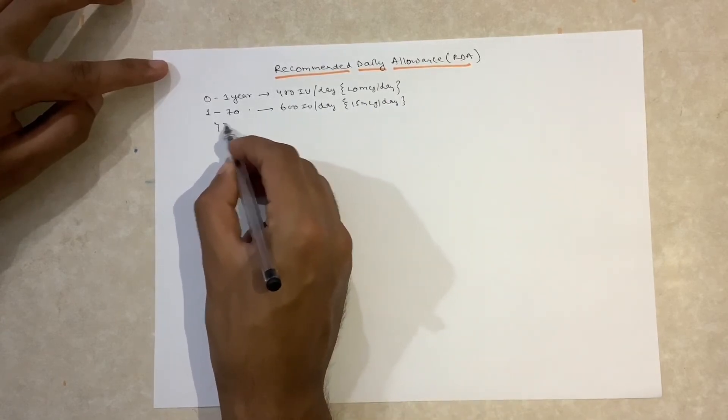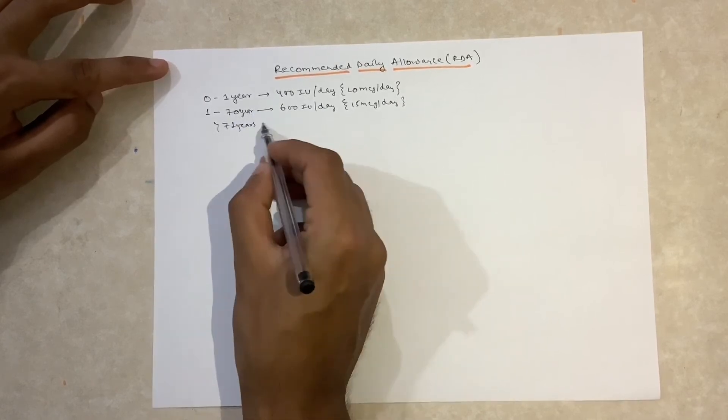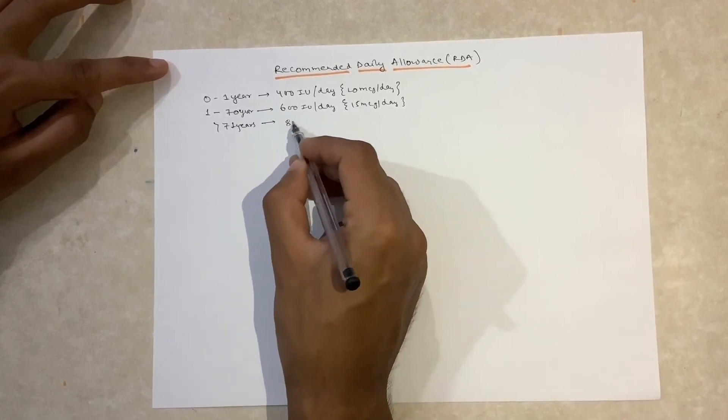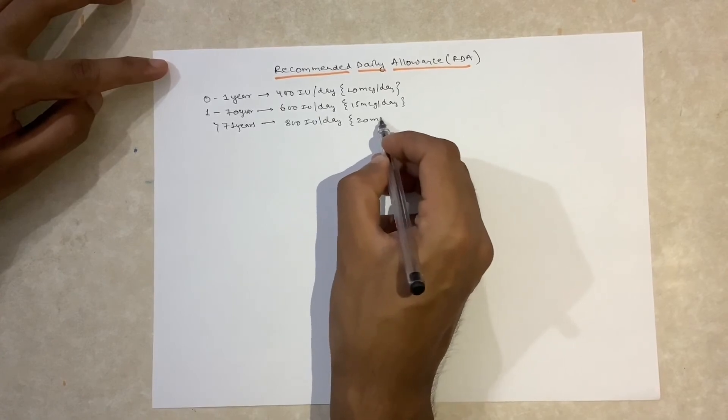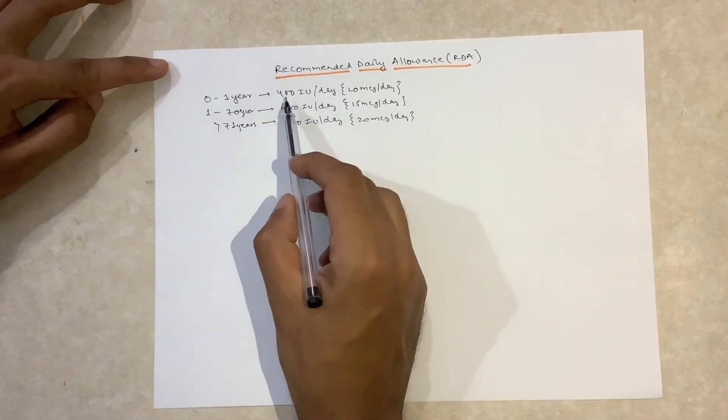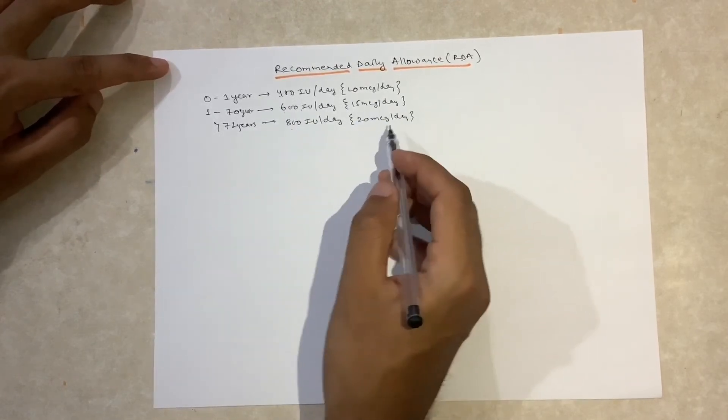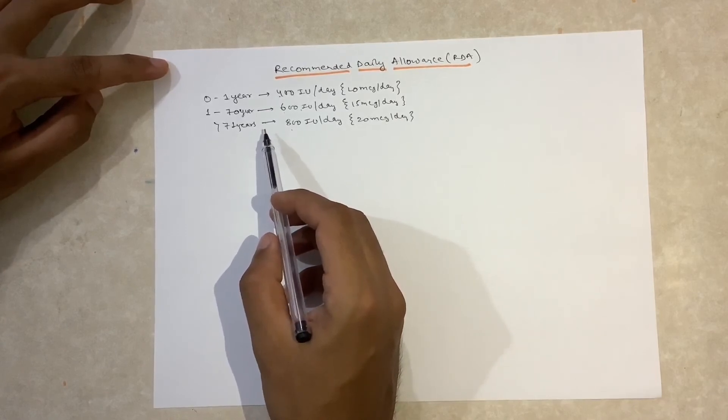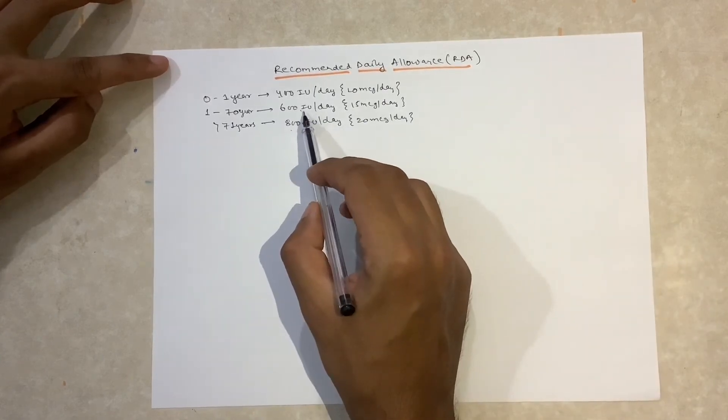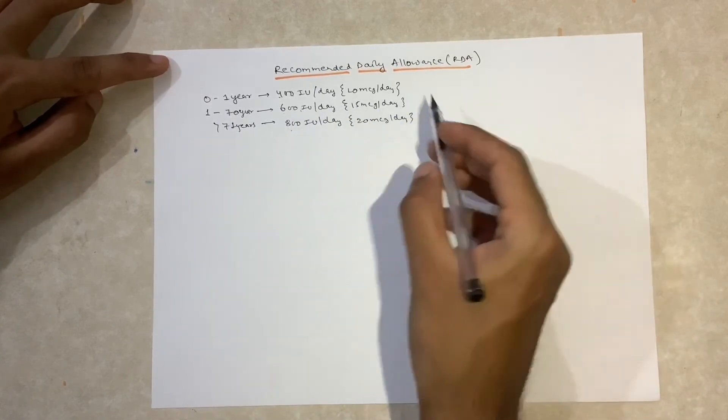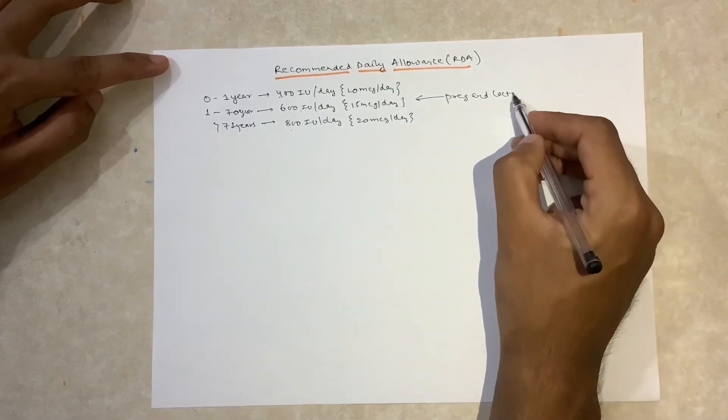Beyond 71 years, it is 800 international units per day, which is 20 micrograms per day. As the pregnant and lactating age falls under 1 to 70 years, the RDA for pregnancy and lactation is also 600 international units per day.